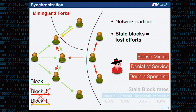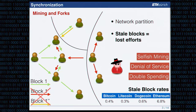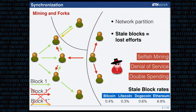To give you real data about the actual networks: in Bitcoin there's about 0.4% stale blocks, while in Ethereum this goes up to nearly 7%. So there's a big difference depending on the network in how high these lost efforts are.